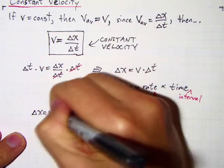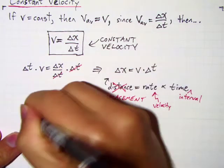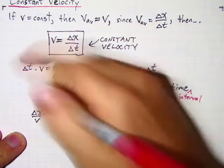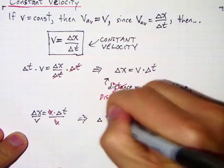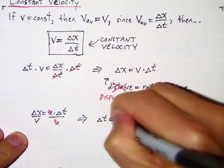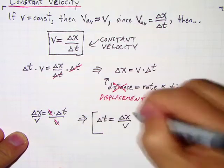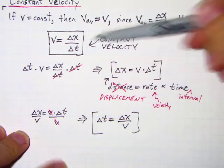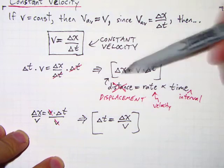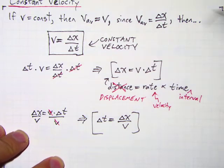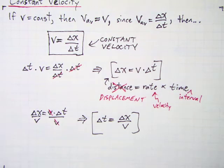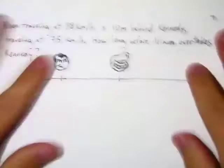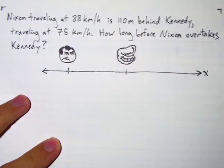Let's rearrange one more way. Starting with delta x equals v times delta t, divide both sides by the velocity. The velocities cancel, letting us rewrite this as delta t equals delta x over v. So here's our constant velocity equation, rearranged to solve for displacement when we know velocity and time interval, and rearranged to solve for the time interval when we know displacement and velocity. Let's look at an example problem of medium difficulty with objects moving only at constant velocity.